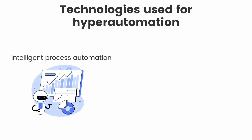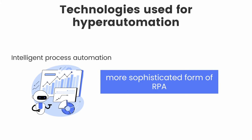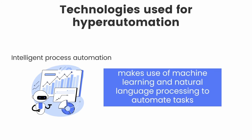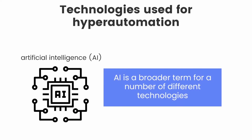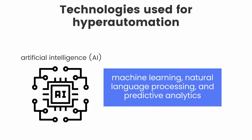Intelligence Process Automation, which is a more sophisticated form of RPA, makes use of machine learning and natural language processing to automate tasks. Artificial intelligence is a broader term for a number of different technologies that can be used for hyper-automation. It includes machine learning, natural language processing, and predictive analytics.